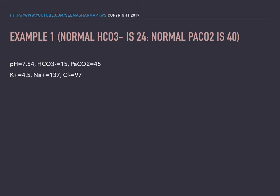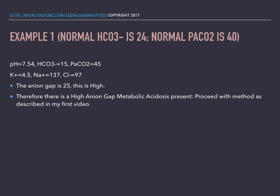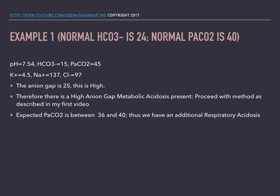The anion gap is 25, and that is high. Therefore, there is a high anion gap metabolic acidosis present. Proceeding with the method as described in my first video, the expected pressure of carbon dioxide is between 36 and 40.